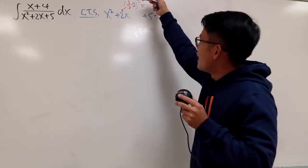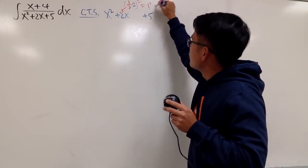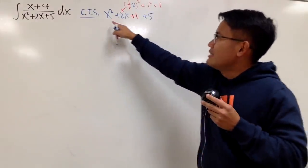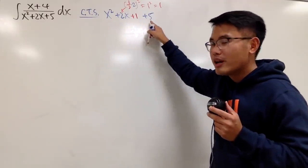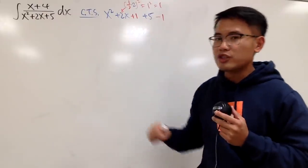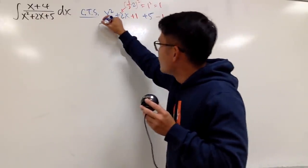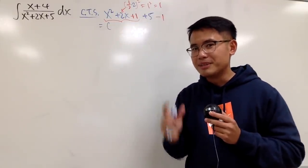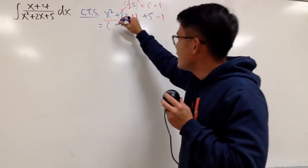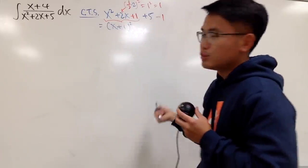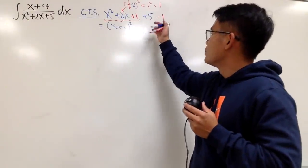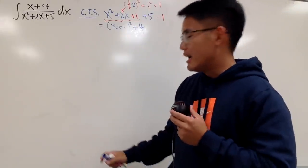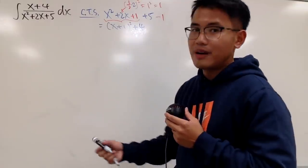One half times 2 is 1, and then you square that — 1 squared is just 1. So the magic number is plus 1. But since this is an expression, we also minus 1 so that we don't change the value of the expression. Now we see that the first three terms are nothing but x plus 1 times x plus 1, which I write as (x+1) squared. And then plus 5 minus 1 gives us plus 4.